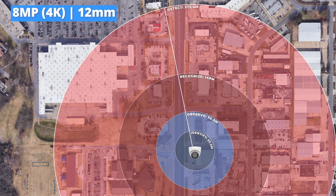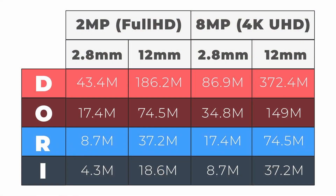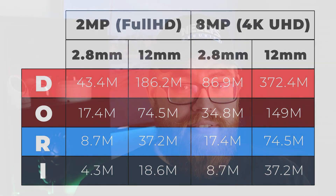Take these numbers with a grain of salt and don't rely 100% on DORI. You'll still want to keep other specs in mind: IR distance if you're recording footage at night, the IP rating if your camera will be outdoors, and the IK rating if it's in an area that's easy to reach or prone to vandalism. There is a lot more that goes into selecting the perfect security camera, but focusing on DORI distances really is a great way to narrow down the vast amount of options available to you.